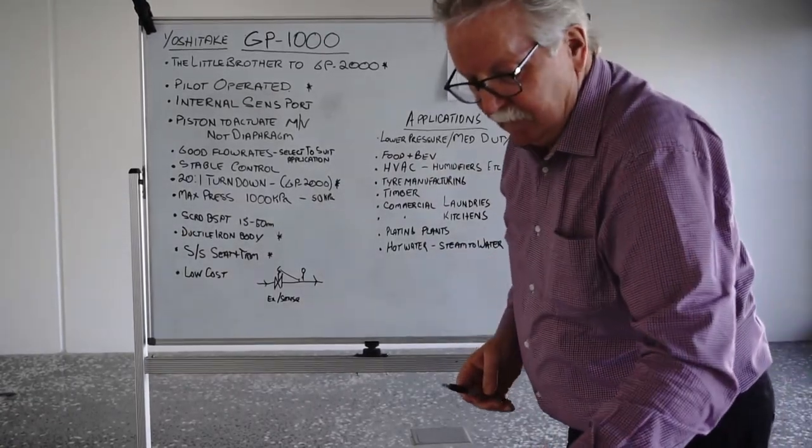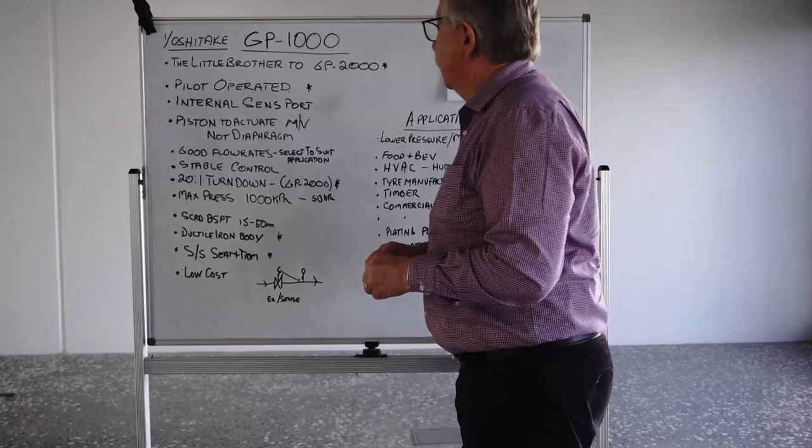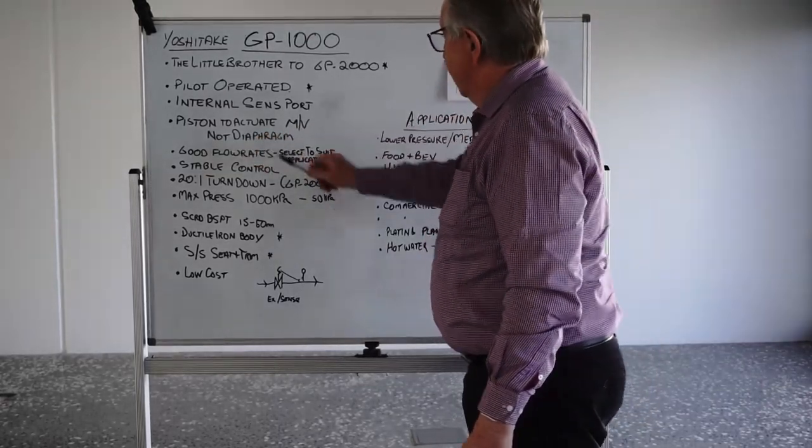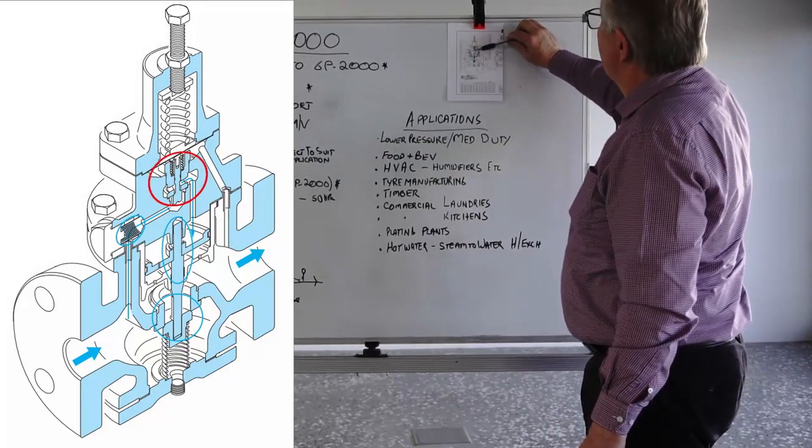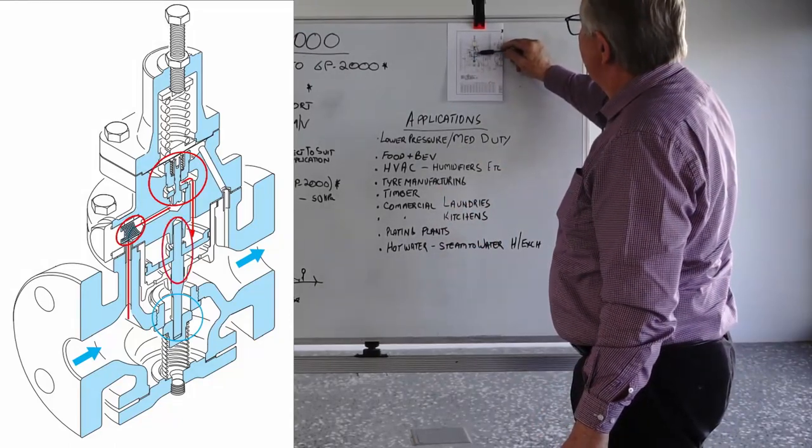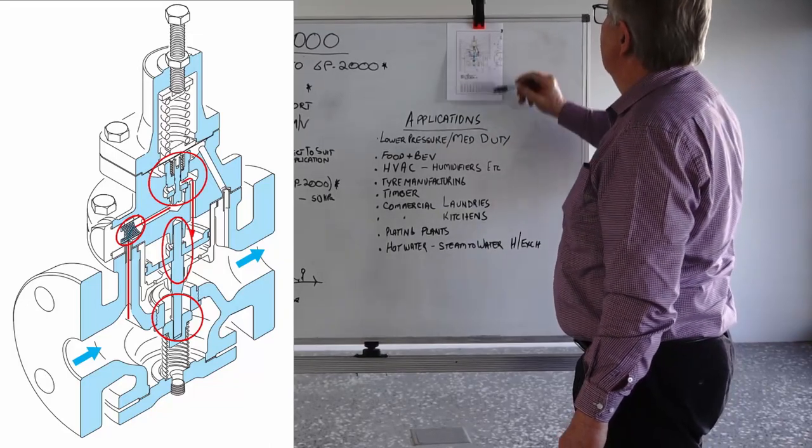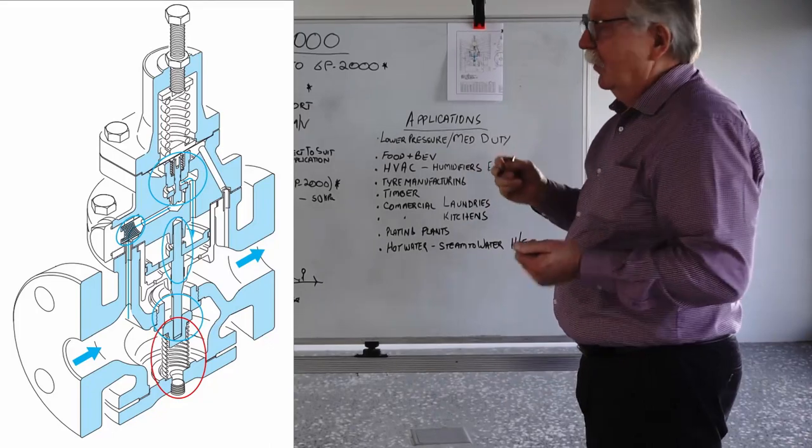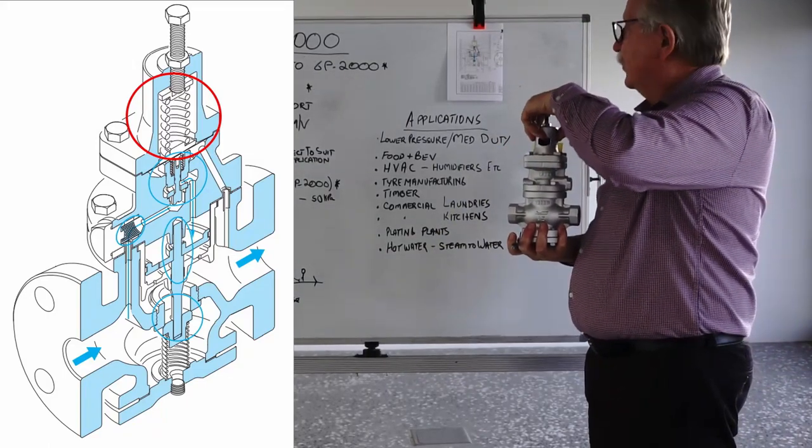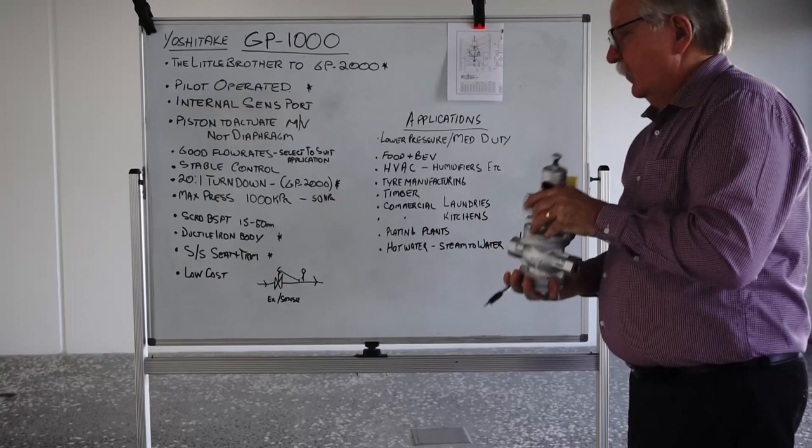Because the difference between this valve, the GP1000 and the GP2000, is that it's piston operated, not diaphragm operated. So it has a piston to actuate the main valve assembly. The GP2000 has a diaphragm, this one doesn't. So the steam that comes through the pilot valve applies the force on the top of the piston. And then with that build up of pressure in there, it'll push the push rod down and open up the main valve which is down in this area here. There's a little spring underneath here which holds it all closed. Then there's no spring tension inside this area here. If that's released and there's no pressure in there, then this little spring under here holds that valve up into that closed position.